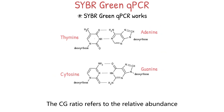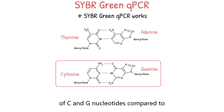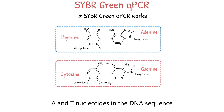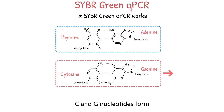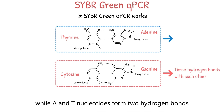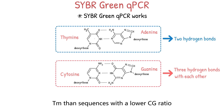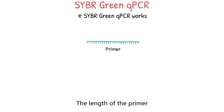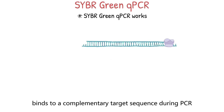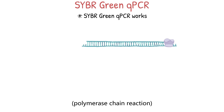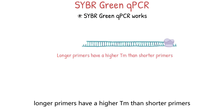The CG ratio refers to the relative abundance of C and G nucleotides compared to A and T nucleotides in the DNA sequence. C and G nucleotides form three hydrogen bonds with each other, while A and T nucleotides form two hydrogen bonds. Therefore, DNA sequences with a higher CG ratio have a higher TM. The length of the primer can also affect TM; generally, longer primers have a higher TM than shorter primers.